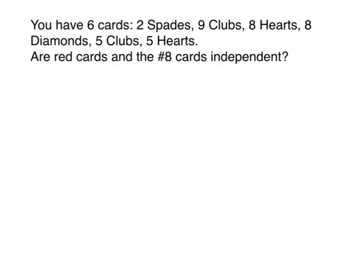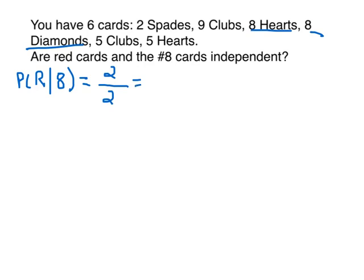Let's try another situation with the same six cards. The question is now: are red cards and the number eight cards independent? I'm going to check the probability of red given the number eight card. The numerator is cards that are red and eight at the same time — there's the eight of hearts and the eight of diamonds, so two of them. Out of how many number eight cards total? Two. So that probability is one.